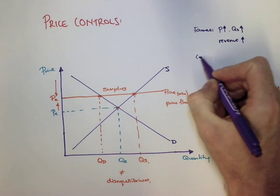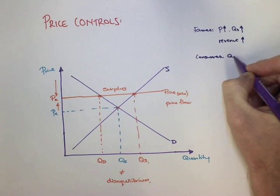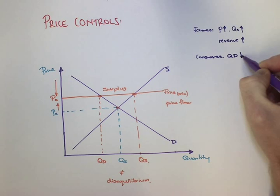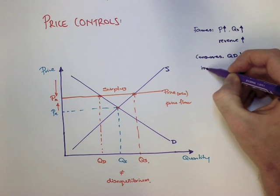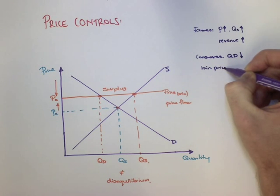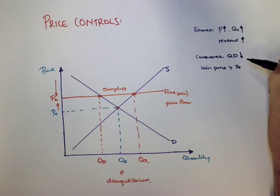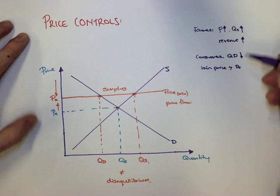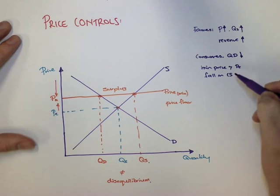The other important group is consumers. Well, consumers' quantity demanded has fallen at the new price because the minimum price is greater than the equilibrium price, and this means that there's a significant fall in consumer surplus for these consumers.